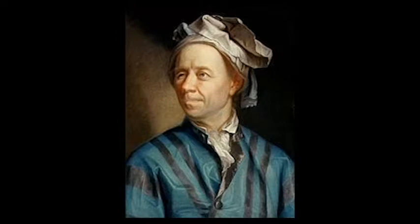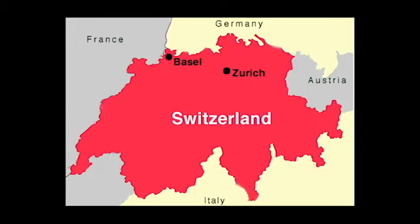So who was this man? Let's take a look at his background. Leonhard was born on April 15, 1707, in Basel, Switzerland. His mother was Marguerite Brucker, and his father was Paul Euler. His mother was a pastor's daughter, and his father was a pastor in a Calvinist church.